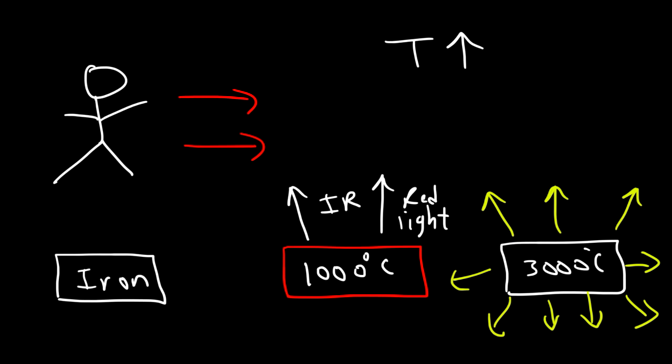The surface of the sun is about 10,000 degrees Kelvin — extremely hot, emitting a great deal of light. At the center of the sun, the temperature is in the millions of degrees Kelvin. So whenever you raise the temperature of an object, it's going to emit more radiation.